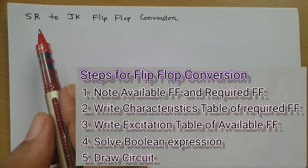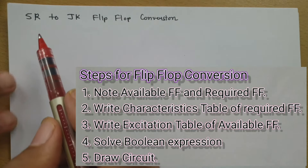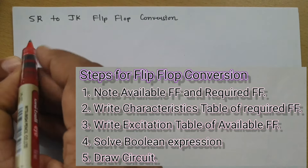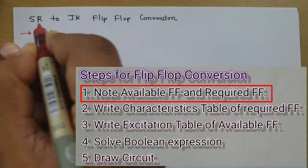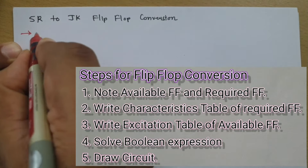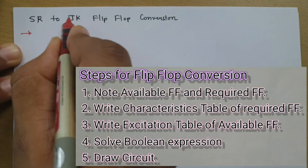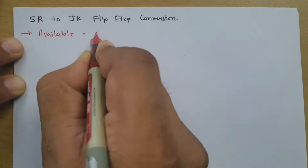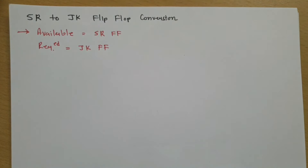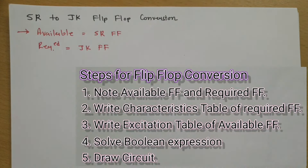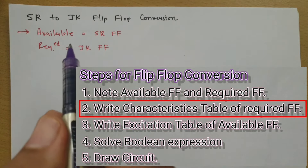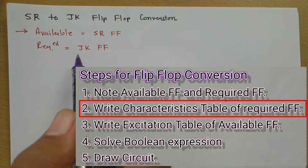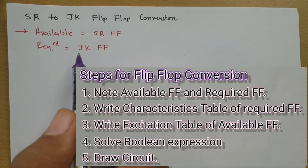Let us begin this session with the first point, which is to note down available and required flip-flop. The available flip-flop is SR flip-flop and the required flip-flop is JK flip-flop. The next step is to write the characteristic table of the required flip-flop, which is the JK flip-flop.